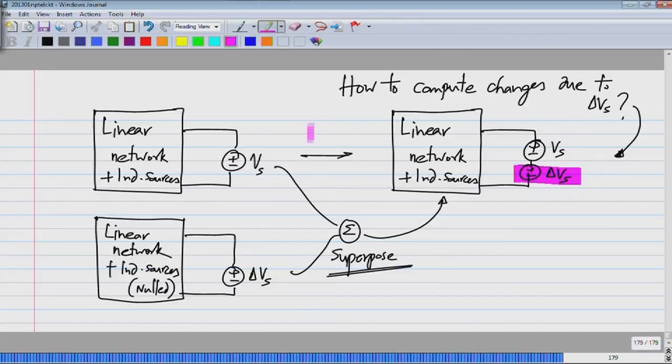But now, the point is that analyzing this circuit with only delta Vs is simpler than reanalyzing the whole circuit. And in fact, if you look at the branch voltages and currents in this, it will be the effect of delta Vs - only the changes to the branch voltages and currents due to delta Vs.